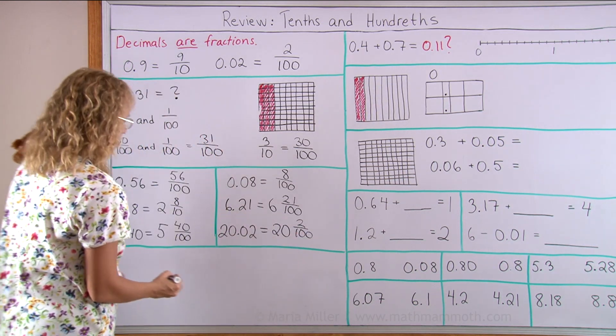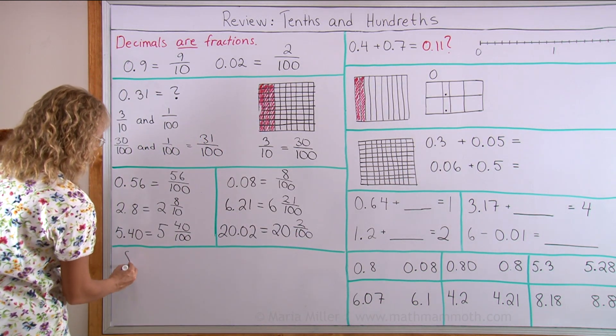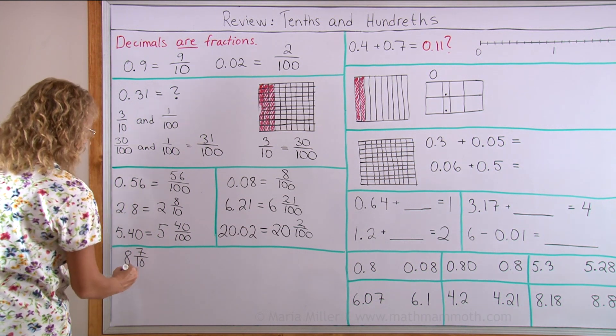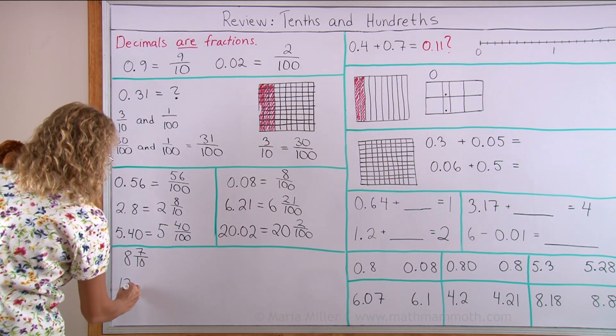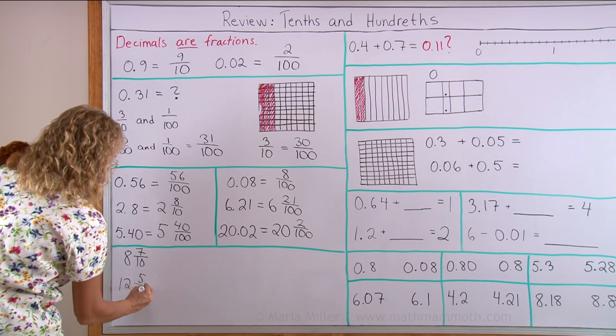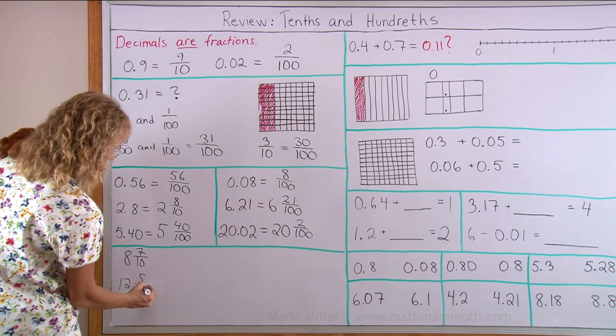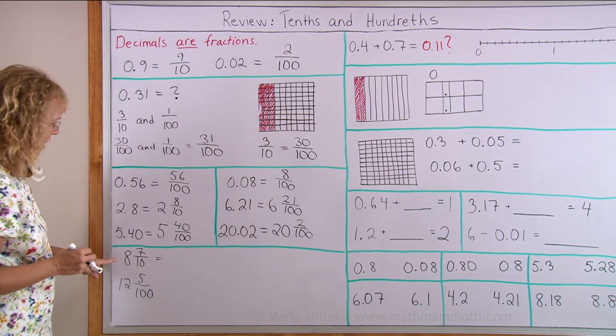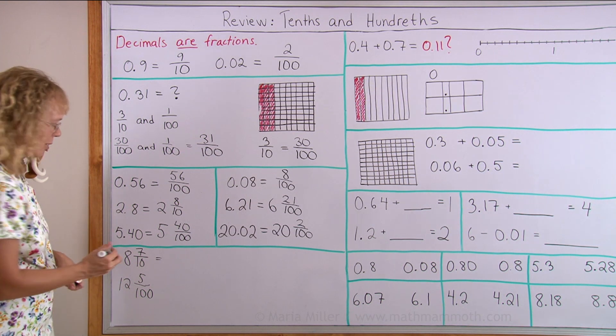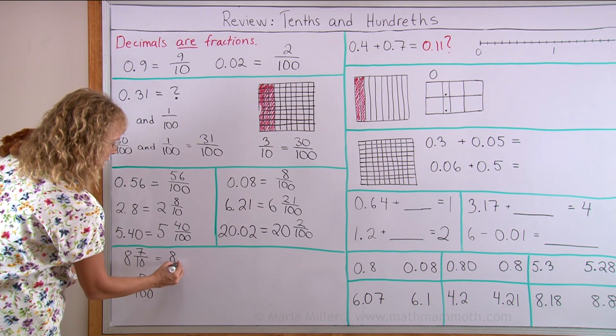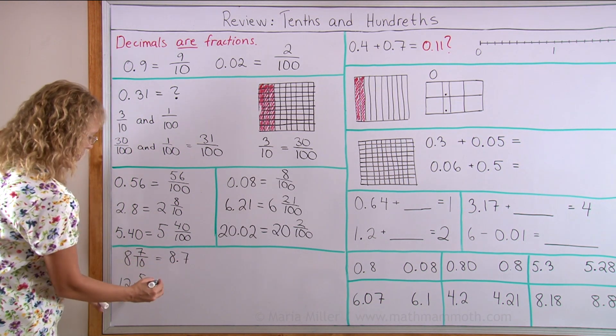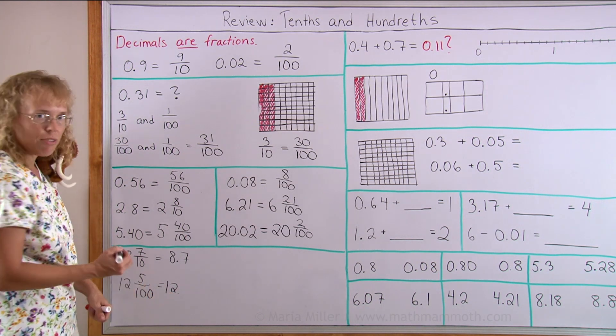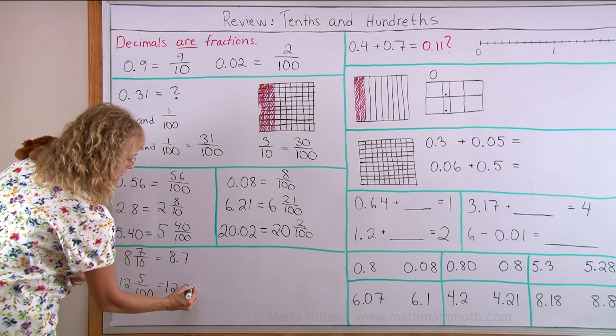Let's try it the other way around too. If I write a fraction here or a mixed number, can you write them as decimals? 8 and 7 tenths as a decimal is 8.7. And this one here as a decimal is 12 and 5 hundredths, so I need to put a zero here and then 5: 12.05.